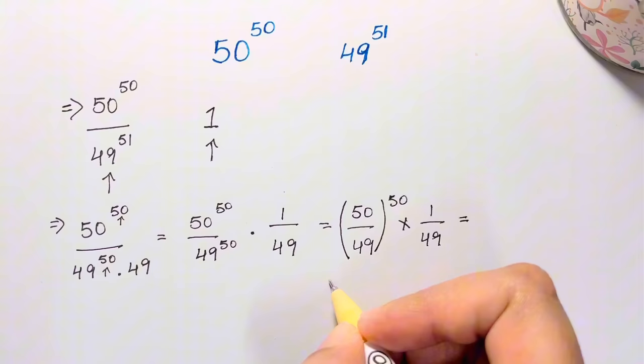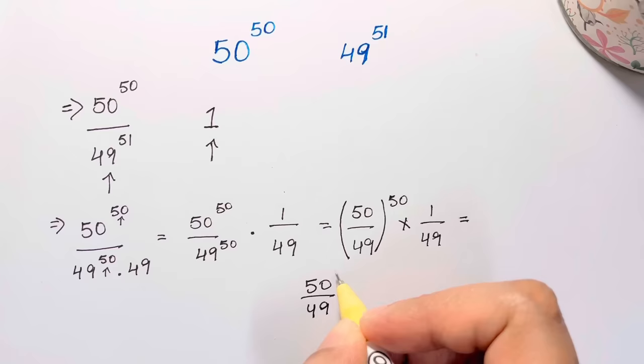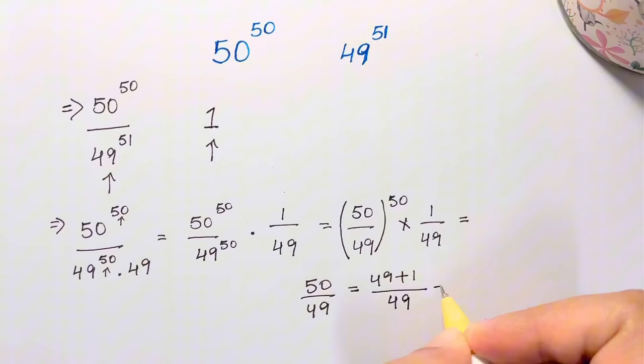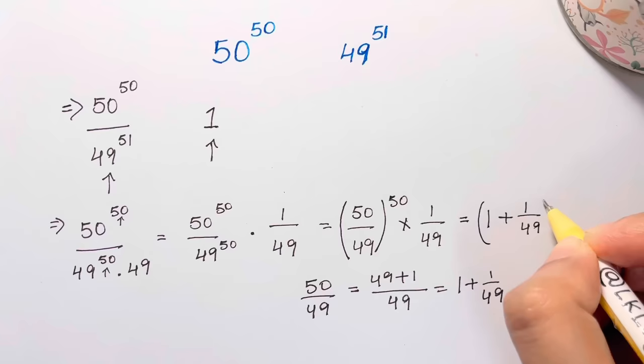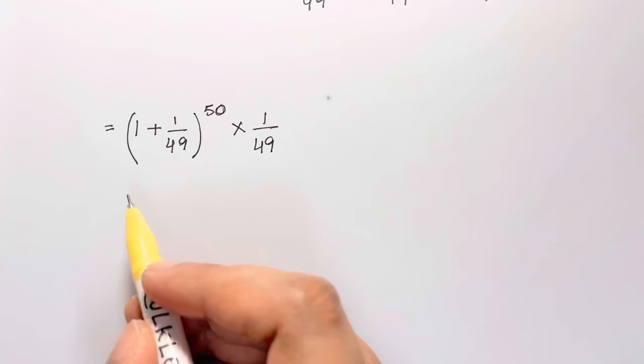Then you can factor this as (50 over 49) to the power of 50, times 1 over 49. Now 50 over 49 can be written as (49 plus 1) over 49, which gives us 1 plus 1 over 49. So the expression becomes (1 plus 1 over 49) to the power of 50, times 1 over 49.